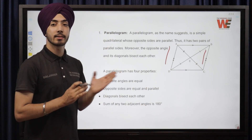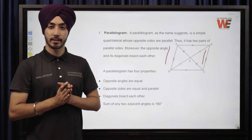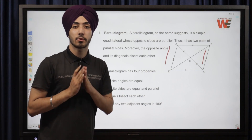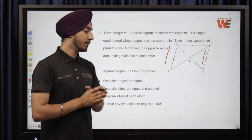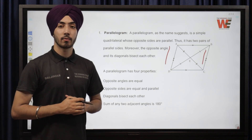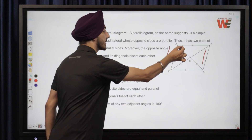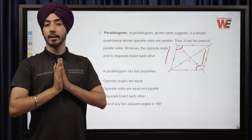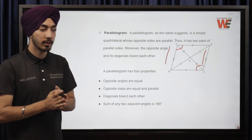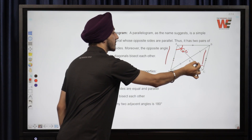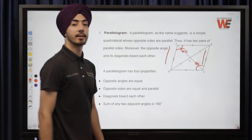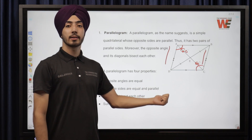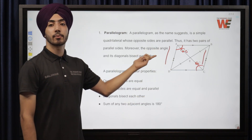If side AD is four centimetres, then side BC would also be four centimetres. Now let's see the properties of a parallelogram. The first property is that its opposite angles are equal. For example, angle A and angle C are opposite angles, so if angle A is 60 degrees then angle C is also 60 degrees. The second property is that opposite sides are equal and parallel, which we already covered in the definition.